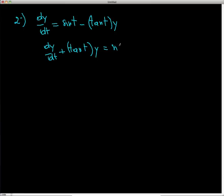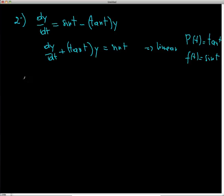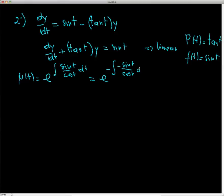We have p(t) = tan(t) and f(t) = sin(t). The integrating factor is μ(t) = e^(∫tan(t)dt) = e^(∫sin(t)/cos(t) dt). We manipulate this as e^(−∫(−sin t/cos t)dt), recognizing that −sin t is the derivative of cos t. By substitution we get e^(−ln|cos t|), which simplifies to 1/cos(t).